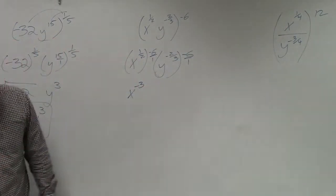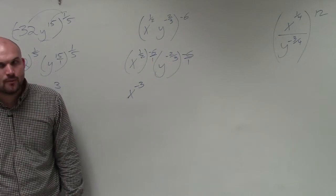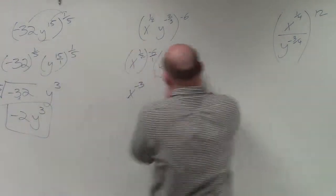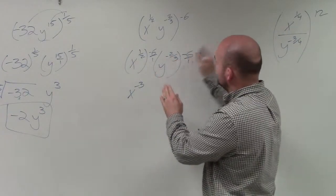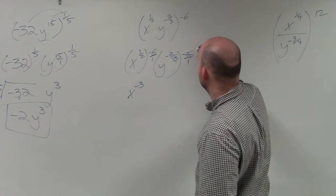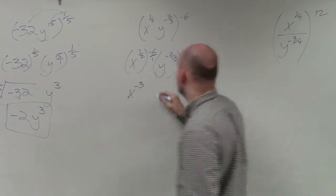What is negative two-thirds times negative six? Well, if you guys multiply across... that becomes a negative two. So you get y to the fourth.